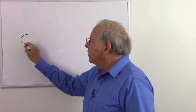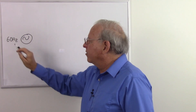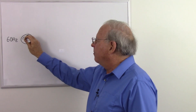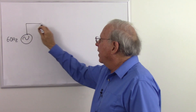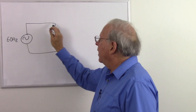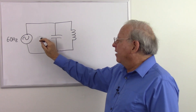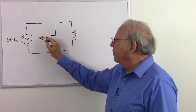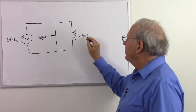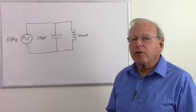I'm going to start with a sine wave generator operating at 60 Hertz. Why 60 Hertz? Because I'm in North America, it's just what I'm used to. The math is the same no matter what your frequency is. And you have a capacitor and an inductor in parallel. Let's make the capacitor 100 microfarads and the inductor 100 millihenries. What we need to do is calculate what the impedance of these two components are working together.